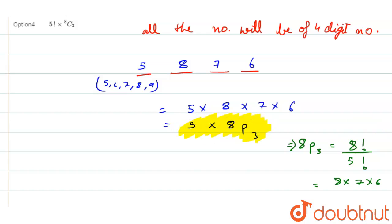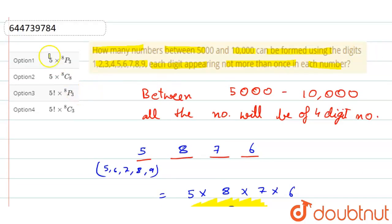So the answer for this question is 5 × 8P3. Let's match it with the options. Option number one will be the answer.